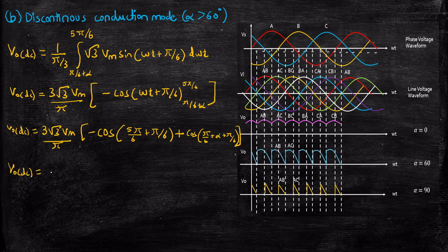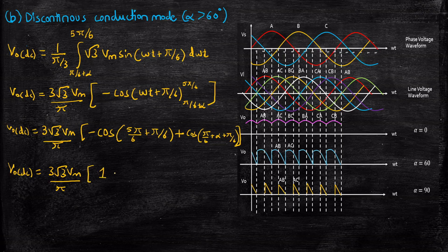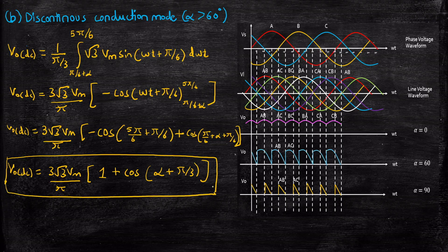Applying the limits, V_out_DC = (3·root(3)·Vm)/pi times: minus cos(5pi/6 + pi/6) plus cos(pi/6 + alpha + pi/6). Now 5pi/6 + pi/6 = 6pi/6 = pi, and cos(pi) = −1, so minus of minus 1 gives plus 1. The lower limit term gives cos(pi/3 + alpha). Therefore, the average DC output voltage under discontinuous conduction mode is (3·root(3)·Vm)/pi times [1 + cos(alpha + pi/3)]. It is extremely important to note these expressions in order to solve problems related to this topic.